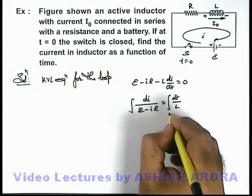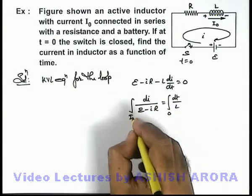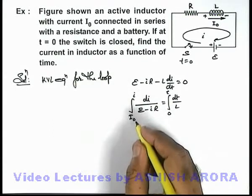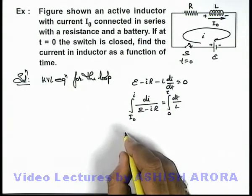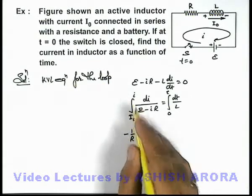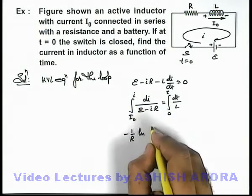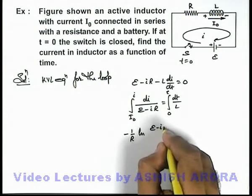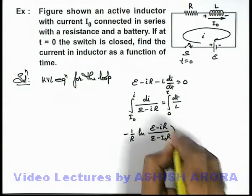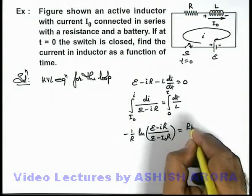Here if we integrate it, at t equal to zero we can take the initial current to be i-not, and at a general time t the current is i. So after integrating we are getting it: minus 1 by R. If we apply the limits directly to save time, here it is E minus iR by E minus i-not R, is equal to t by L.